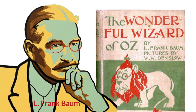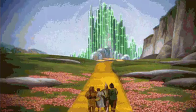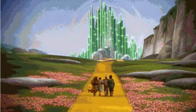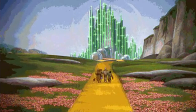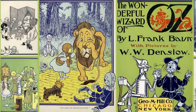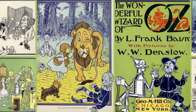L. Frank Baum's The Wonderful Wizard of Oz, first published in 1900, is a series of picture books containing 14 volumes. This story chronicles the adventures of a young farm girl Dorothy and the magical Wizard of Oz. It is one of the most famous stories in American literature and has been widely translated.